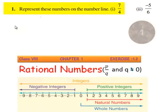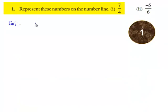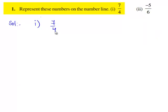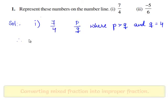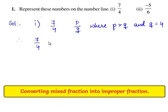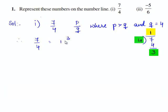Now, let us move on to the first bit of the question. Here we need to represent 7 by 4 on the number line. This rational number is in the standard form p by q, where p is greater than q and q is equal to 4. When p is greater than q, the rational number is in its improper form. Therefore, we shall first convert 7 by 4 into its mixed fraction form. The mixed fraction of 7 by 4 is 1 and 3 by 4.